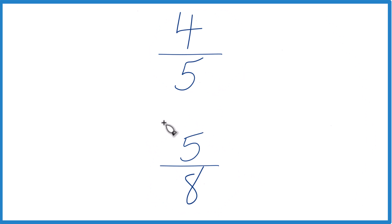So there's two ways you could figure out which one's larger. First off, you could take 4 divided by 5, get a decimal, 5 divided by 8, get a decimal, just compare the decimals.